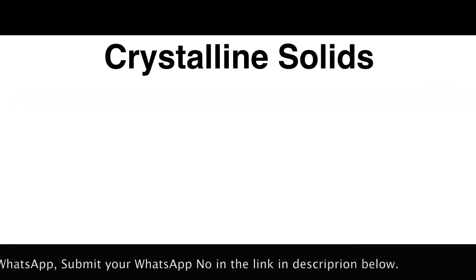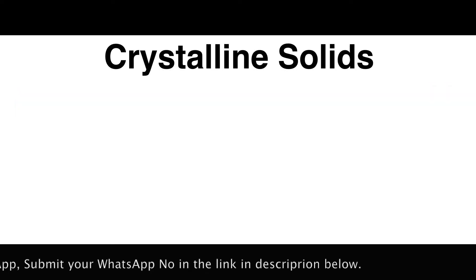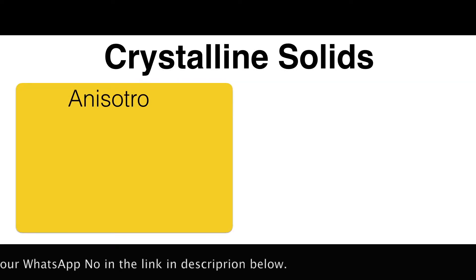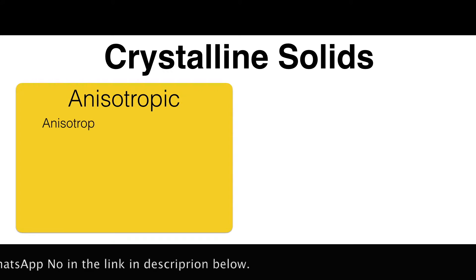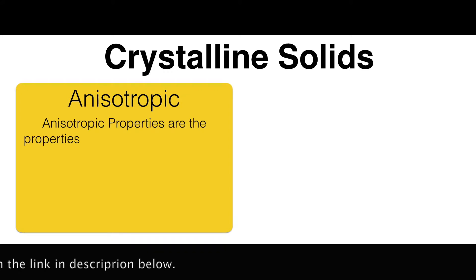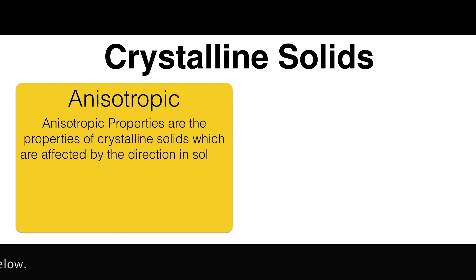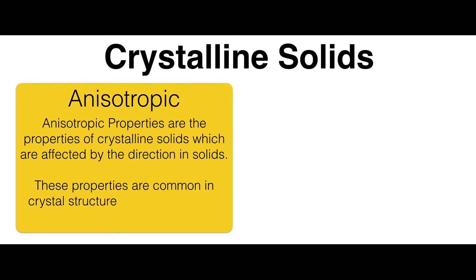Now let's talk about anisotropic and isotropic properties. Anisotropic properties are the properties of crystalline solids which are affected by the direction in the solid. These properties are common in crystal structures other than cubic.